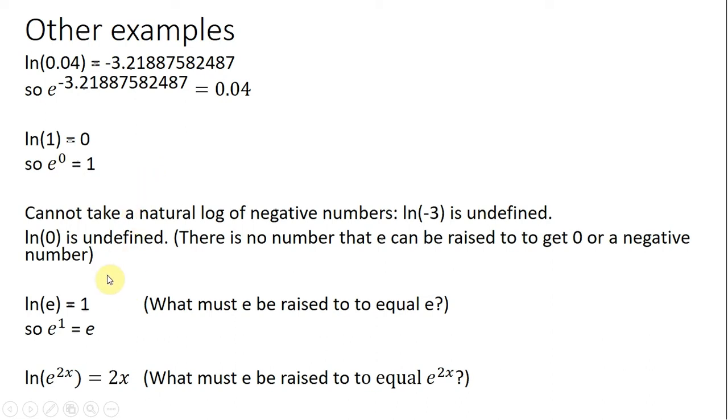A few things to keep in mind. We cannot take a natural log of a negative number. The natural log of negative 3 is undefined, as well as a natural log of 0. Why is that? There is no number that e can be raised to to get it to equal 0 or a negative number.